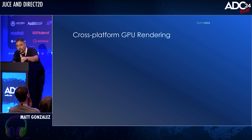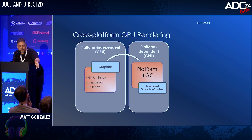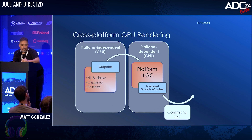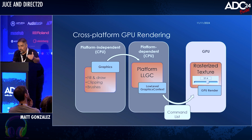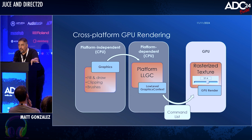What we really want is cross-platform GPU-based rendering. That's going to be pretty similar — the graphics class talking to a different low-level graphics context, this time implementing some 3D graphics API, which will be building a command list pushed out to the GPU. The GPU is then tasked with executing the command list to rasterize a bitmap, offloading the CPU for valuable cycles for signal processing. That's the dream — that's what we ultimately want.